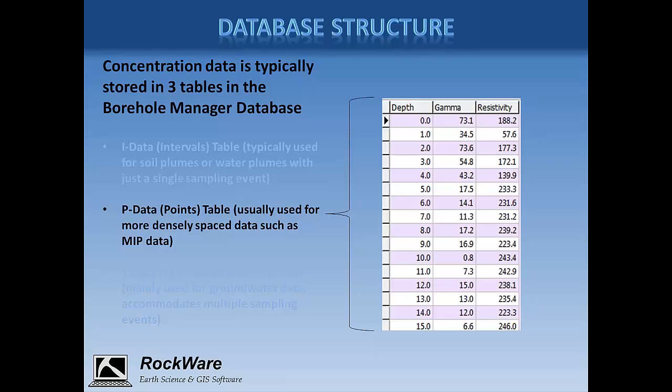This is an example of what the p-data table looks like. It's basically identical to the interval-based table except that we just have a single field for a depth value. We typically see more densely spaced data such as geophysical data stored here, but we're also seeing more and more MIP data stored here. The data is plotted in strip logs as curves. There's really no reason you couldn't store concentration data here as well, but we'd recommend that only if you have multiple samples per borehole.